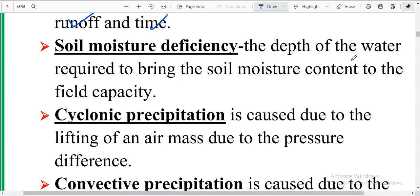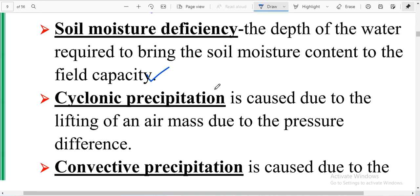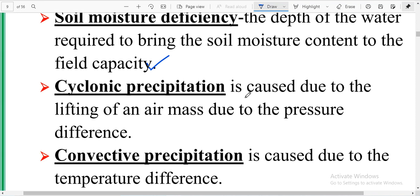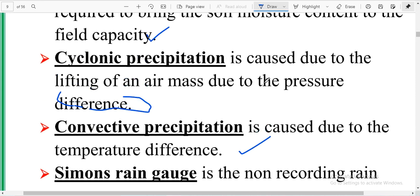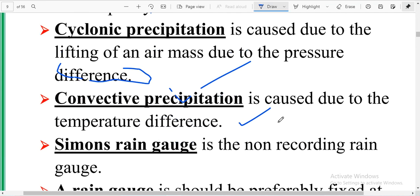Cyclonic precipitation is the lifting of air mass due to pressure difference. Convective precipitation is due to temperature difference. Orographic precipitation is due to mountain barrier.